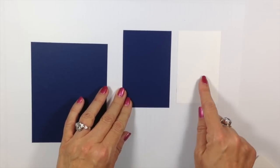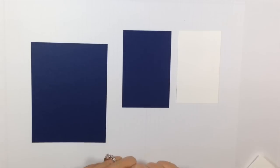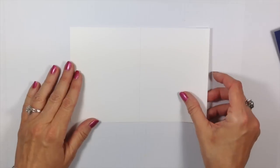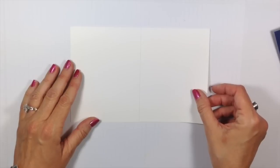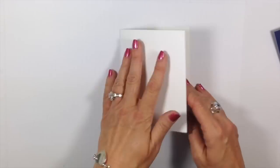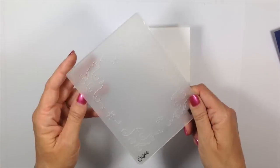My Night of Navy is two and three quarters by four and a quarter. My Whisper White is two and a half by four inches. My last piece is our Whisper White cut eight by five and a quarter, scored at four inches.